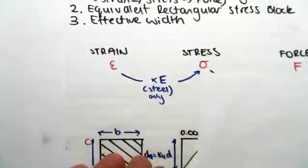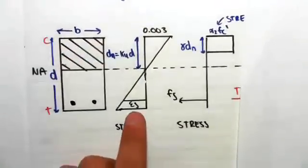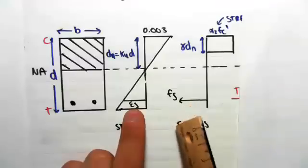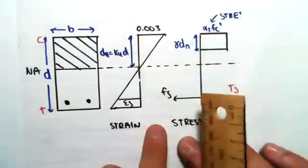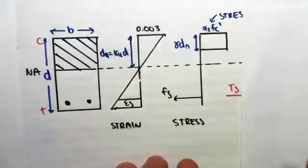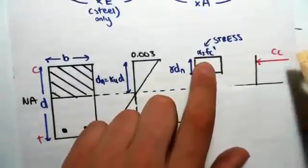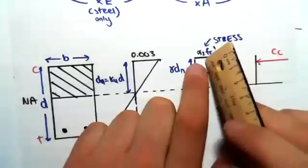Then we go from strain to stress. So as I said, we can work out the stress in the steel by just multiplying the strain by the elastic modulus. So that will give us the stress in the steel, the tensile steel down there. And as I said, the stress in the concrete is given to us in the code.